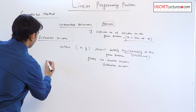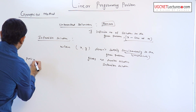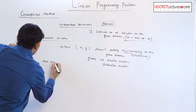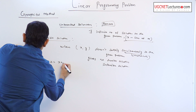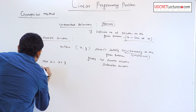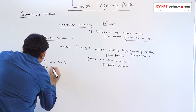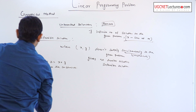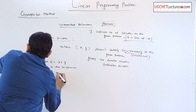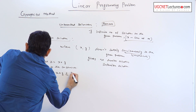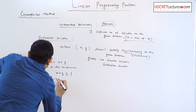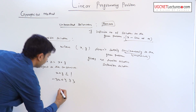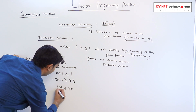Let's take an example. If the problem is the maximization of z equal to x plus y, subject to the constraints: first, x plus y is less than or equal to 1, and second, minus 3x plus y is greater than or equal to 3, and all decision variables x and y are non-negative.